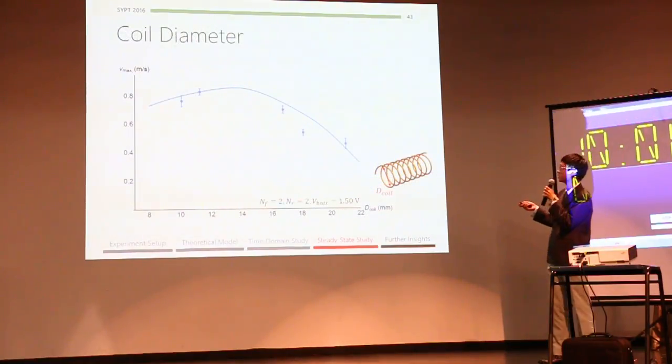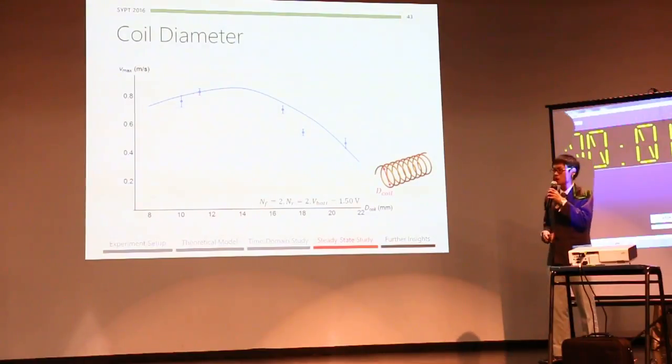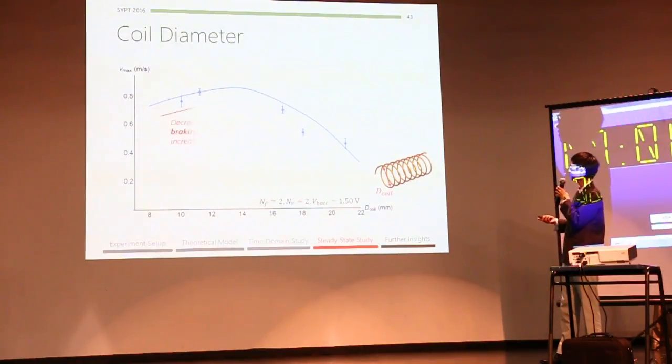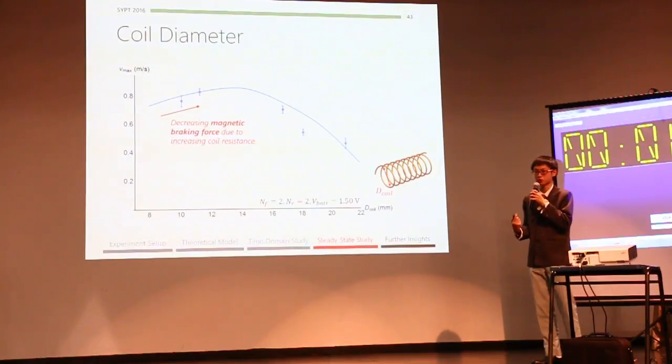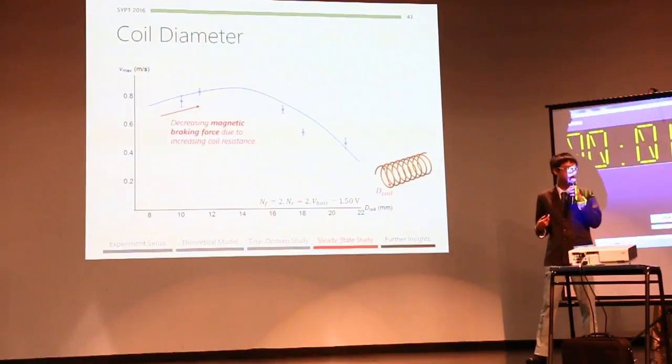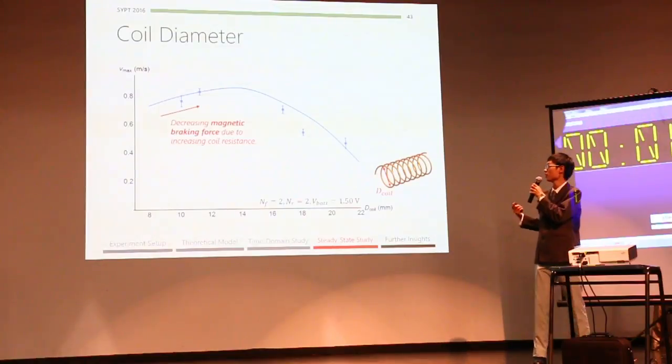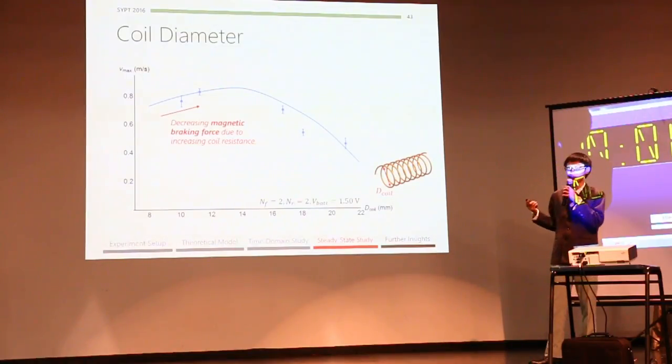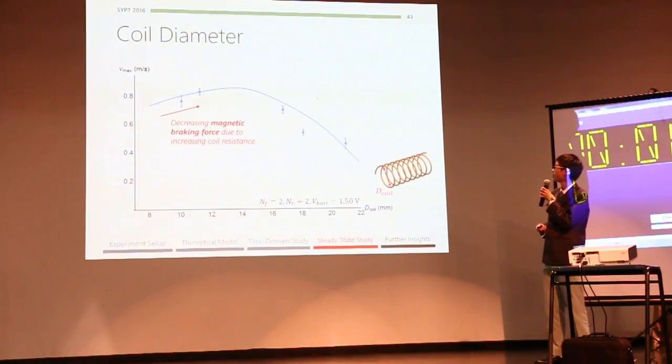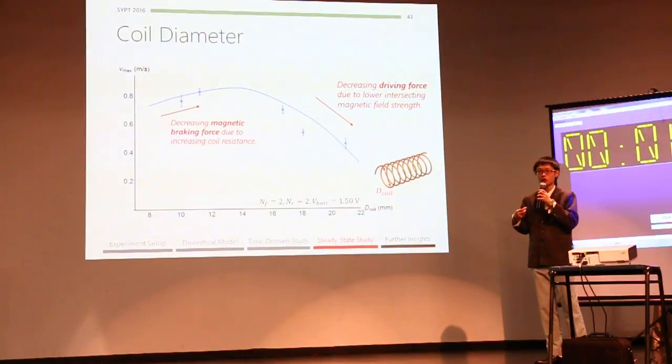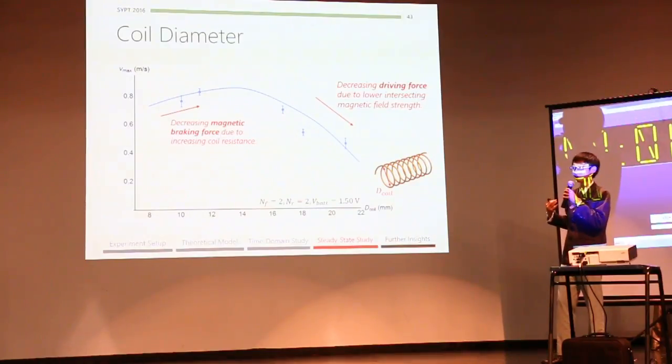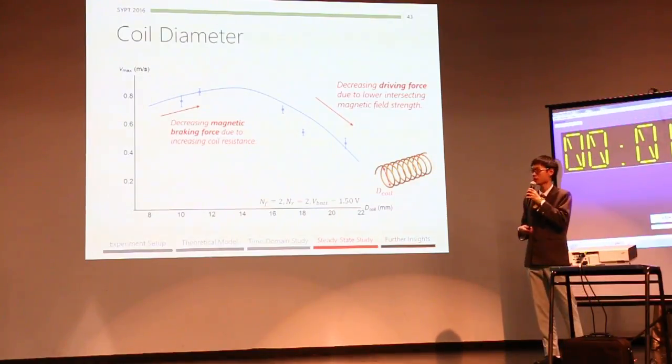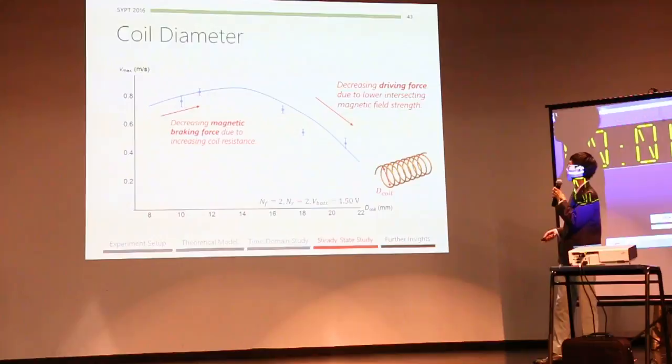Now, here is a graph of the speed of the train versus the coil diameter, and we know that this is very interesting. As we first increase the coil diameter, the length of our wire increases, and therefore, there is increased resistance. This also suggests a decrease of driving force on the train, and therefore, an increased speed of the train. However, as we continue increasing our coil diameter to extreme values, the driving force will decrease because there is decreasing magnetic field strength intersecting our wire coil, and this explains this decreasing part of the graph.